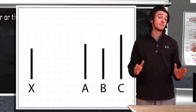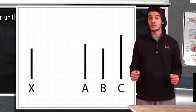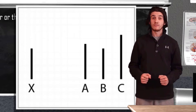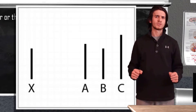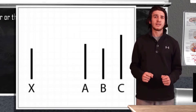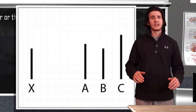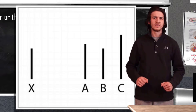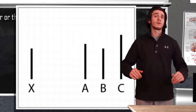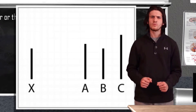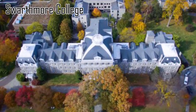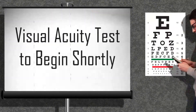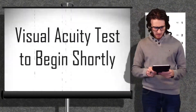Asch would draw the card and then, starting with the confederates, would ask for a response before making his way to the actual test subject. In some rounds the confederates would give the correct response, while in others they would purposely choose the incorrect response in order to see if the test subject conforms. We have some rare footage of the experiment being conducted so we can see firsthand how this went down.